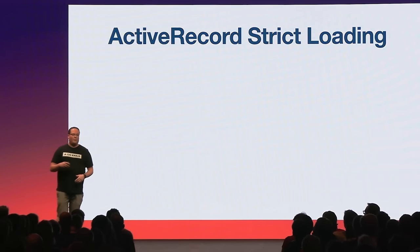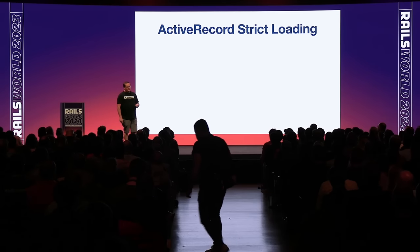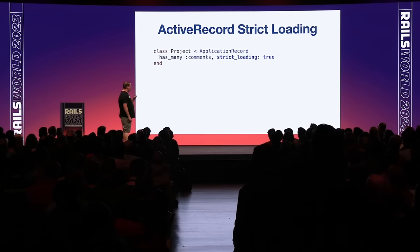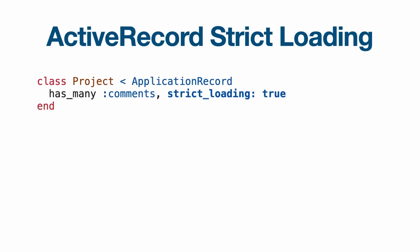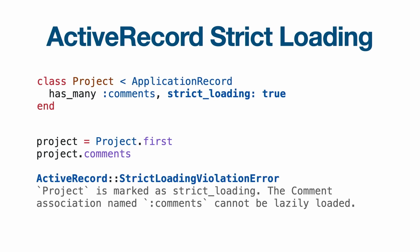Another thing we can do is remove dependencies. If you've ever used the Bullet gem to detect N+1 queries, it's another dependency you have to maintain and keep compatible with Rails 7.1 as you upgrade. But Active Record added strict loading, so we can use that instead of a separate gem. You can add this either as a scope on your queries or on associations. If we load the first project without saying we want to load the comments, when we attempt to load the comments it will raise an Active Record strict loading violation error.